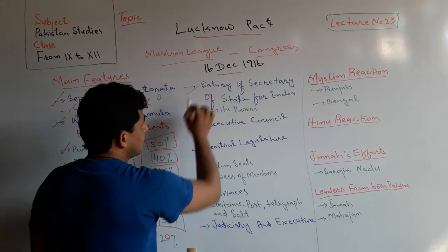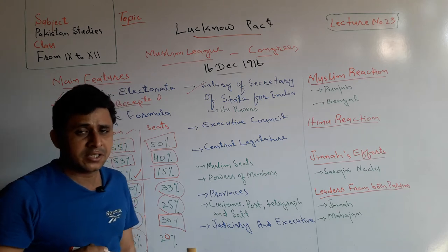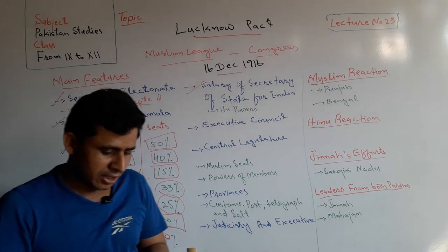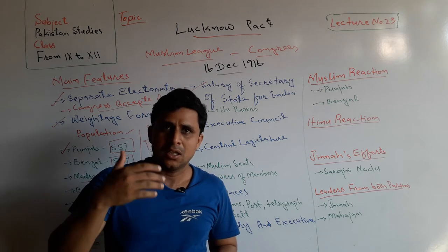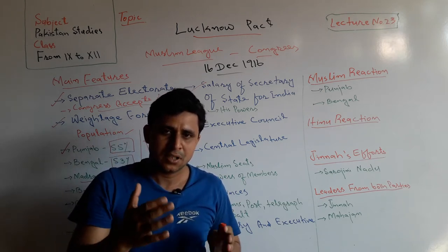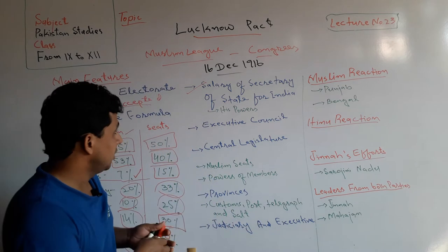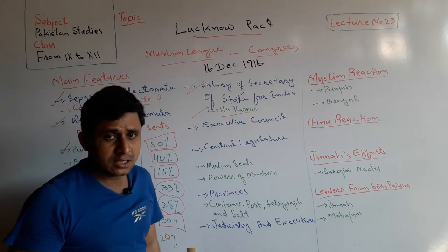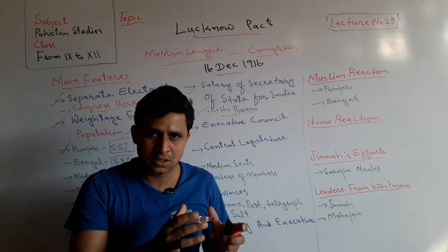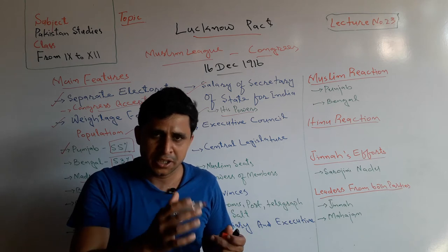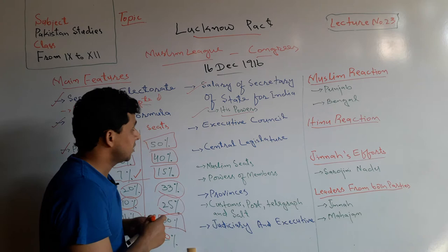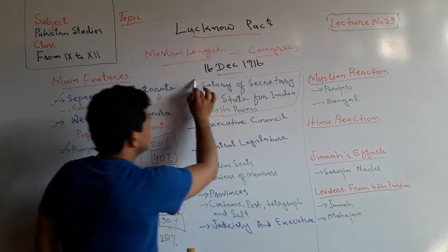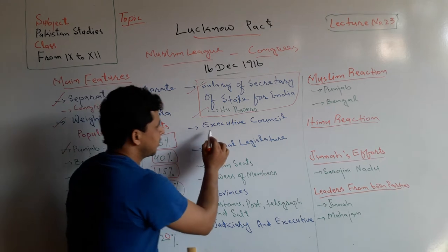In the Lucknow Pact, it was also said that the salary of the Secretary of State for India should be given from the British treasury, not from the Office of India. It was also said that his powers should be reduced, and in his assistant councils, one Indian member should be included. In this way, the Secretary of State for India was also discussed in the Lucknow Pact.